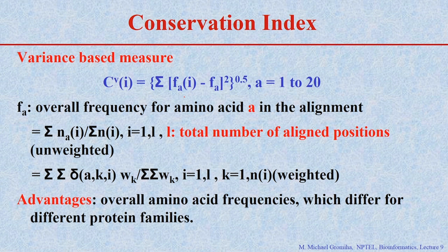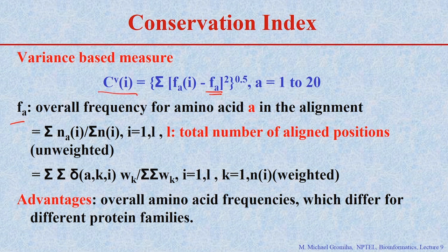The equation is: F(a,i) is the frequency of amino acid 'a' at position i in the alignment, and F(a) is the overall frequency of amino acid 'a' in the alignment. We compare this with any particular position using the equation: take F(a,i) minus F(a), square it, sum over all pairs, then take the square root to get the conservation score. We can use either weighted or unweighted frequencies.